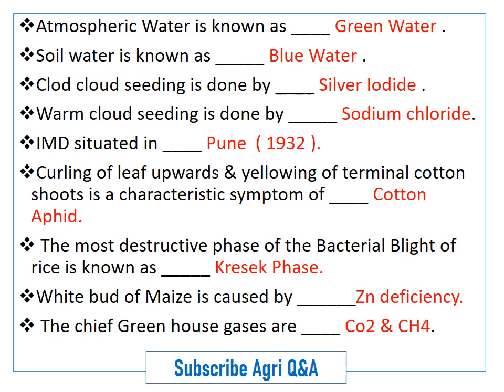The Indian Meteorological Department is situated in Pune. Curling of leaves upward and wilting of terminal cotton shoots is a characteristic symptom of cotton aphid.